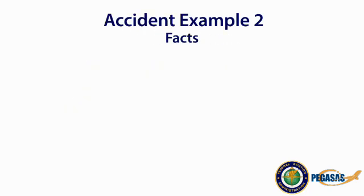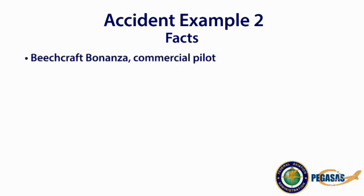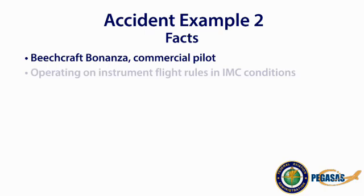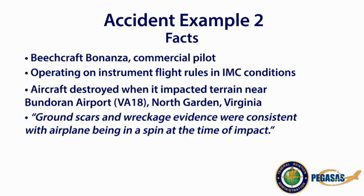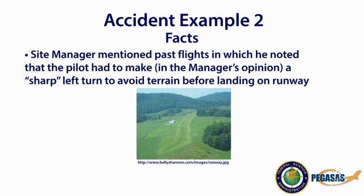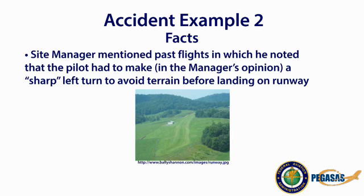In the second accident case study, the aircraft was a Beechcraft Bonanza B36TC flown by a commercial pilot. It was operating on instrument flight rules in IMC conditions. The aircraft was destroyed when it impacted terrain near Bundaran Airport, North Garden, Virginia. Ground scars and wreckage evidence were consistent with the airplane being in a spin at the time of impact. The site manager mentioned past flights in which the pilot had to make, in the manager's opinion, a sharp left turn to avoid terrain before landing on the runway.